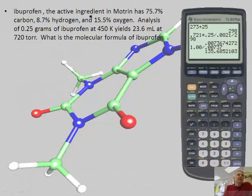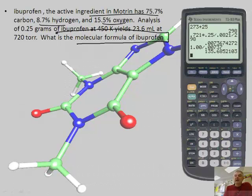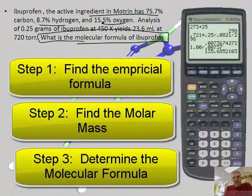Hey, we got one more. Ibuprofen, the active ingredient in Motrin, has this many carbon, hydrogen, and oxygen. Analysis of this today yields what is the molecular formula. Now this is a little more complex problem. If I get percentage data, we're going to use an old axiom: percent to mass, mass to mole, divide by small, times to a whole to find the answer.